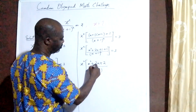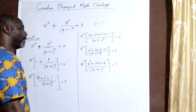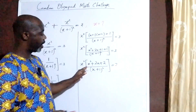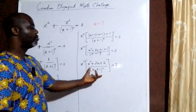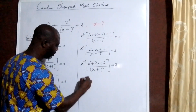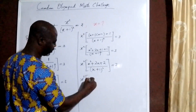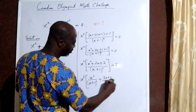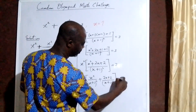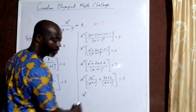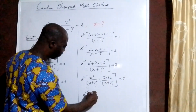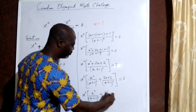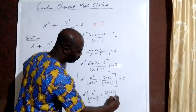Now, what we have in the brackets is a single fraction. We are going to express this into a partial fraction — split it up into two different fractions with the same denominator. We take x squared over (x+1) squared plus (2x+2) over (x+1) squared, equal to 3. Then we factorize 2 out: x squared times [x squared over (x+1) squared plus 2(x+1) over (x+1) squared].